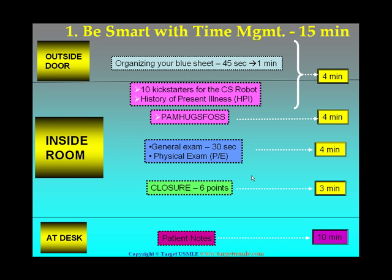The first four minutes is for history of present illness. The next four is for Pam Huggs-Voss, and the next four minutes is for physical examination including a short general examination, and three minutes for closure. Have an internal clock of four minutes because you're not going to be looking at the clock in the room. I also recommend spending about 45 seconds to one minute outside the door, because organizing yourself before you enter is very crucial.